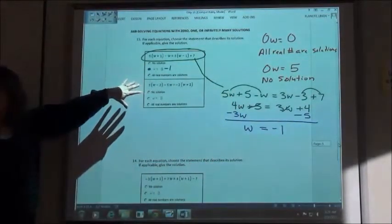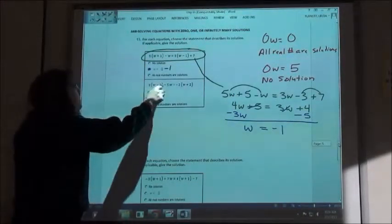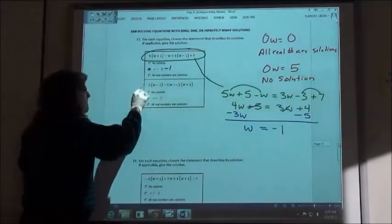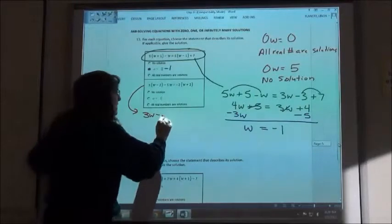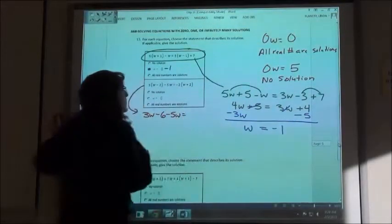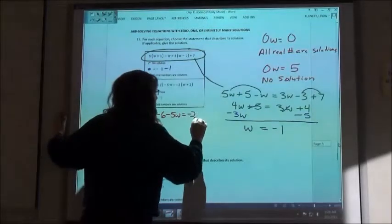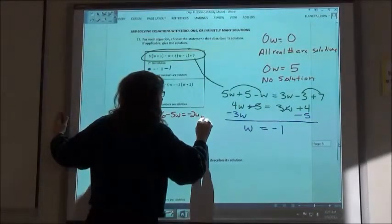Now I got to do the second one. So on the second one, you do the second one. What are we going to get? Okay. So we got 3w minus 6 minus 5w equals negative 2w. Negative 4.